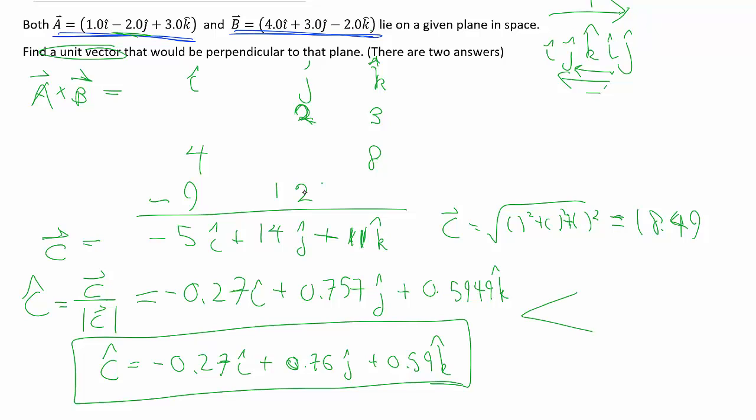Of course, as we've talked about earlier, say here's the plane, we can have one pointing that way, but we could also have another vector pointing down, and that's also perpendicular. So the other choice is, of course, we just multiply this by negative. So in which case, we can have positive I, negative J, and negative K. So both are valid answers.